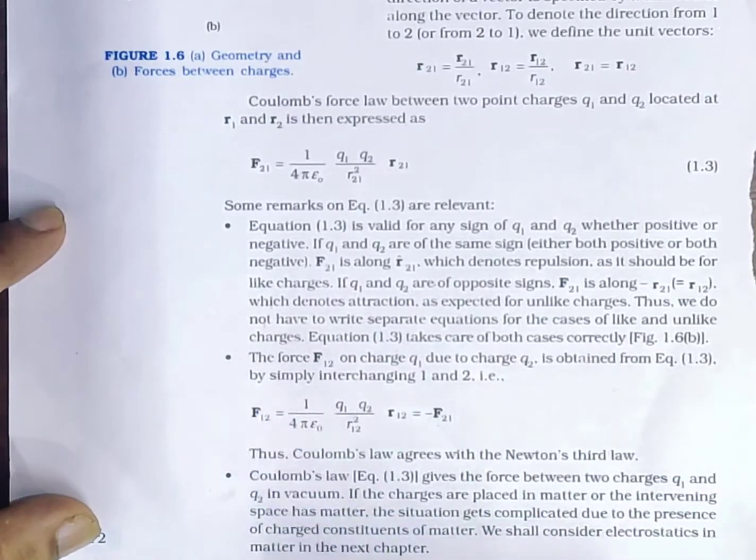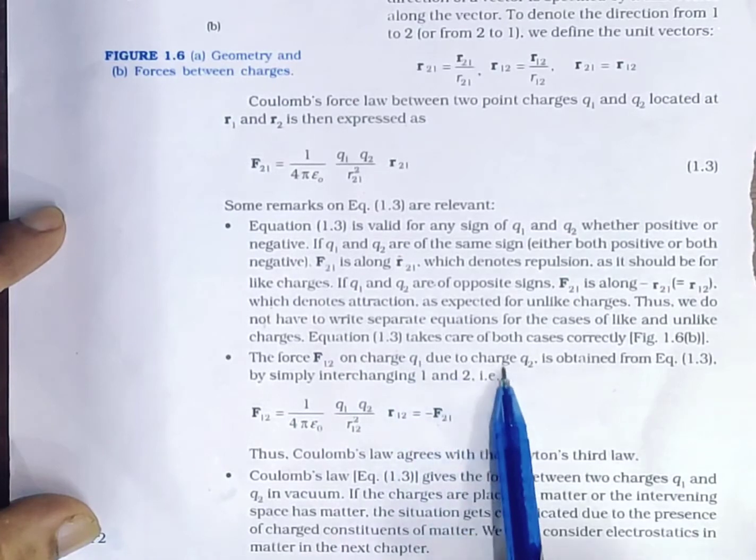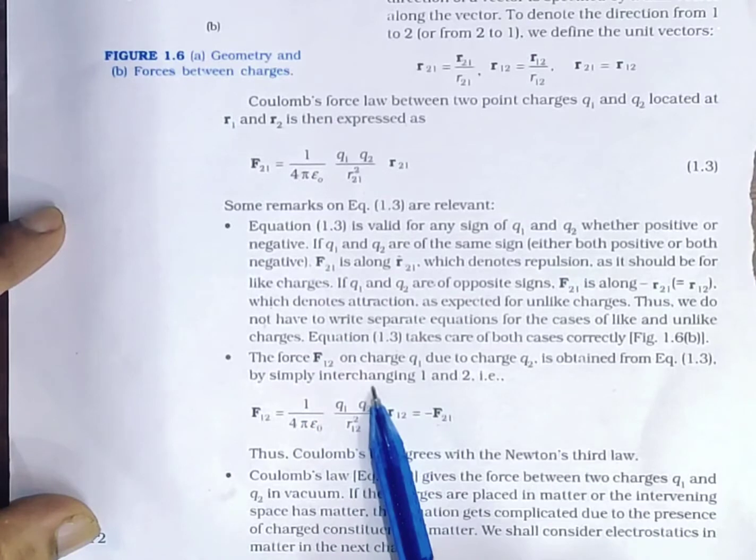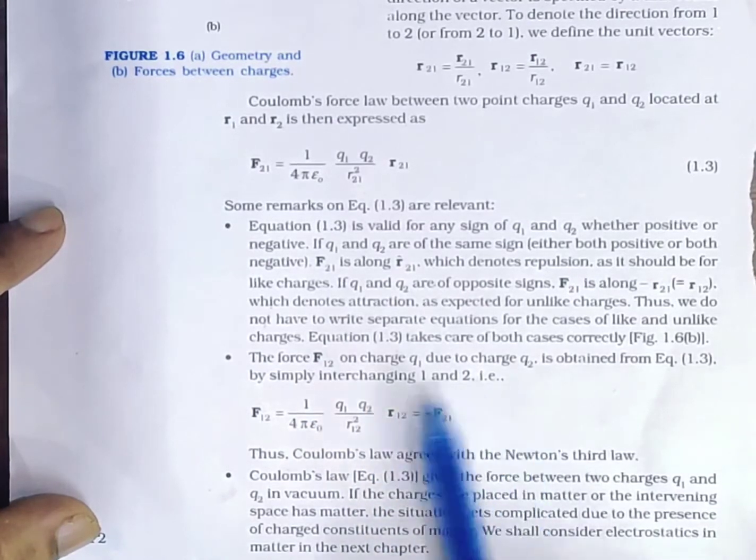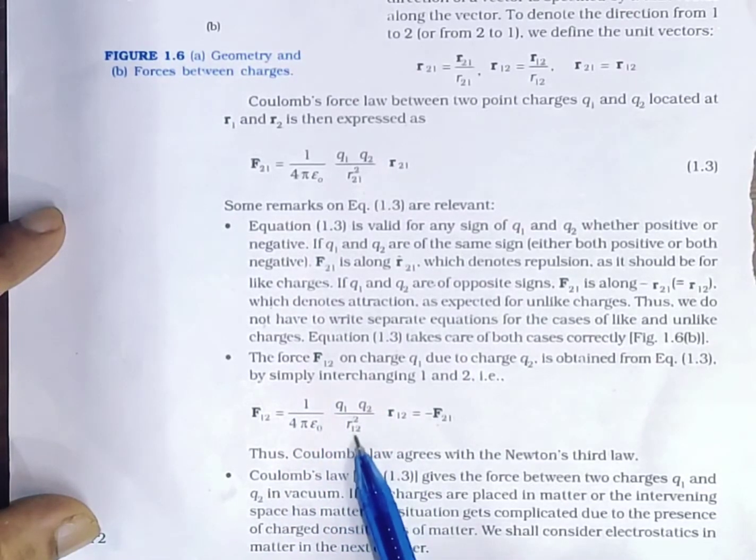Second point: the force F12 on charge Q1 due to charge Q2 is obtained from equation 1.3 by simply interchanging suffixes 1 and 2. That is, F12 equals 1 over 4πε₀ times Q1Q2 divided by r12 squared times unit vector r̂12.